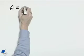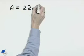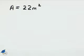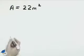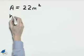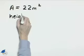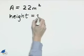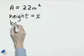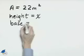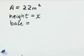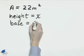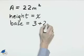We're told that the area is 22 square meters and the base is 3 meters greater than 2 times the height. The height will be our variable—I'll call it x. And the base is 3 meters greater than 2 times the height, so that's 3 plus 2x.